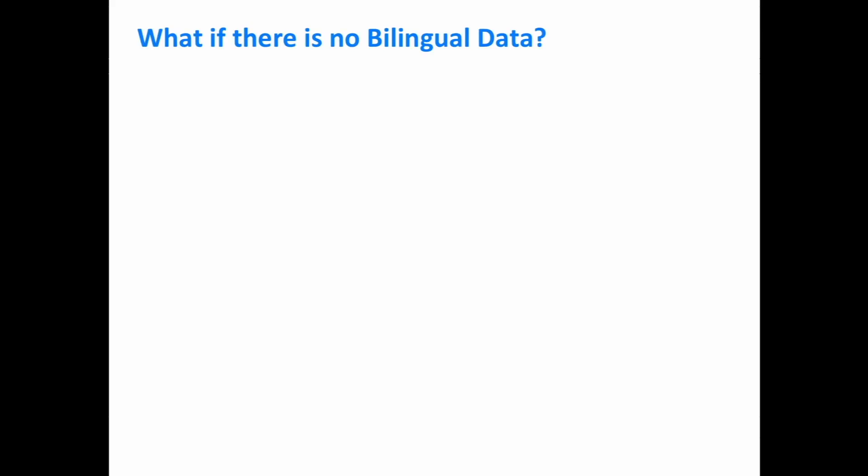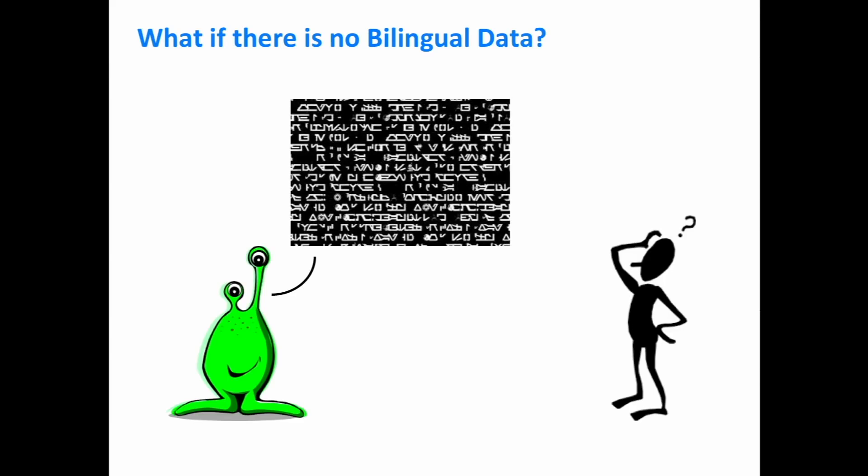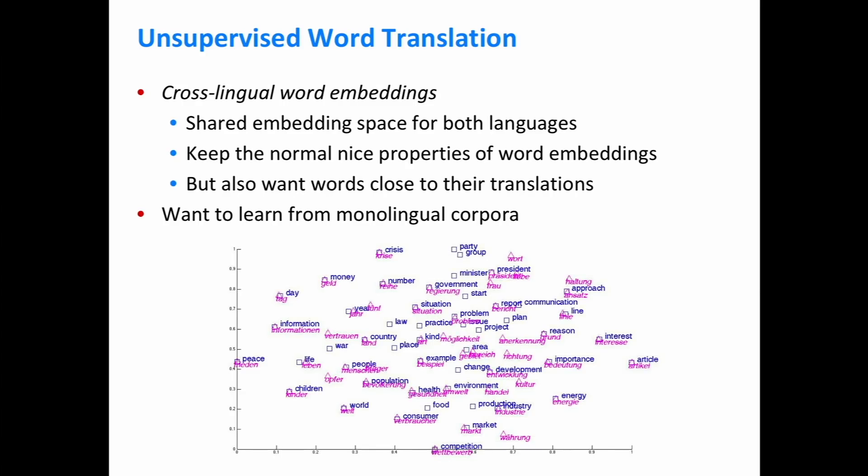An interesting question: suppose we only have monolingual corpora — no human-translated sentences, just sentences in two languages. Imagine an alien comes down and starts talking in its weird alien language, and it talks a lot. Would you eventually be able to translate what it's saying to English just by having a really large amount of data? Starting with a simpler task than full sentence translation, let's consider word-to-word translation without any label data. The method we'll use is called cross-lingual embeddings — the goal is to learn word vectors for words in both languages.